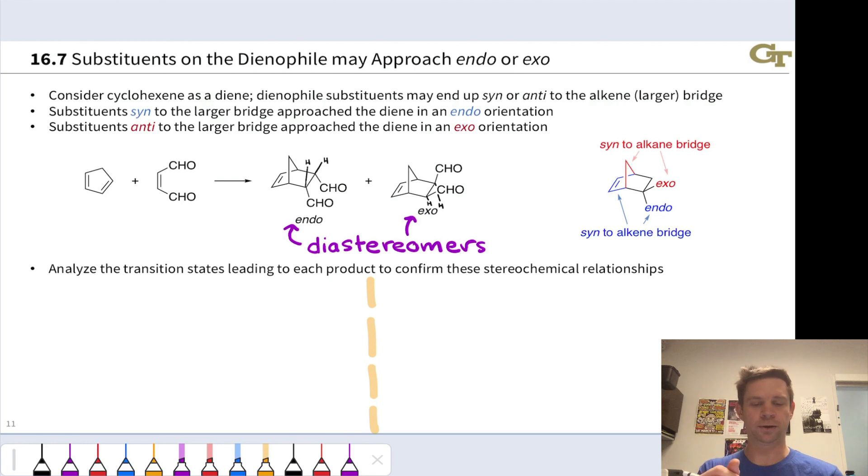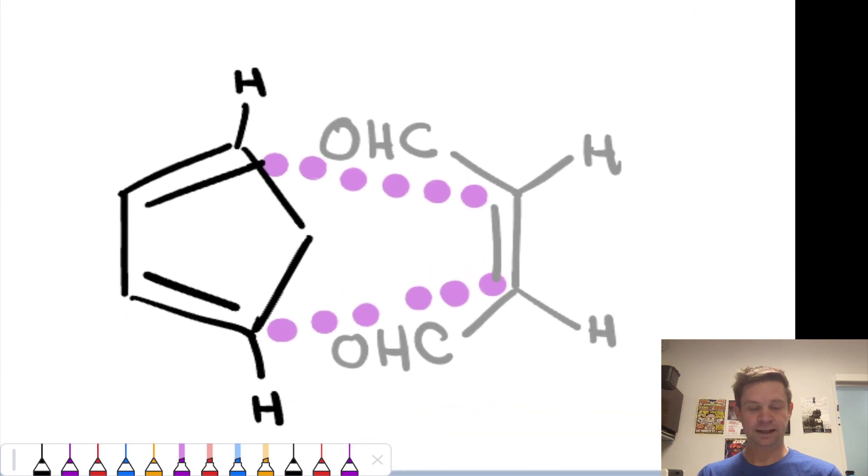So first, let's consider the endo case. The endo transition state and endo product are called as such because the aldehyde groups are approaching underneath the diene. So the way to visualize this is,